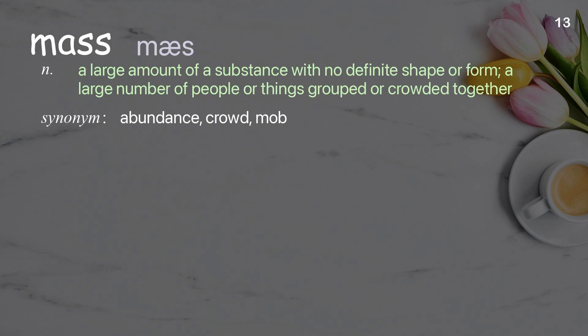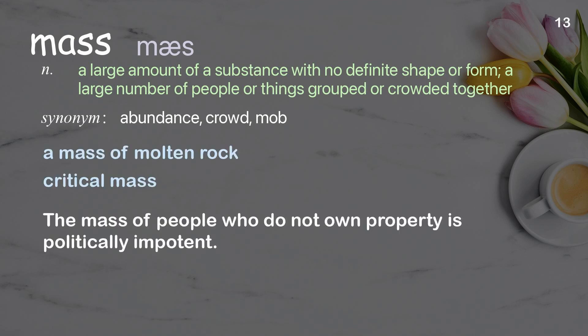Mass: a large amount of a substance with no definite shape or form; a large number of people or things grouped or crowded together. Examples: a mass of molten rock, critical mass. The mass of people who do not own property is politically impotent.